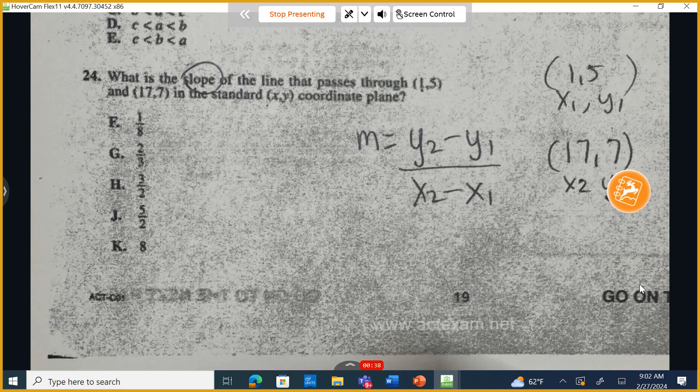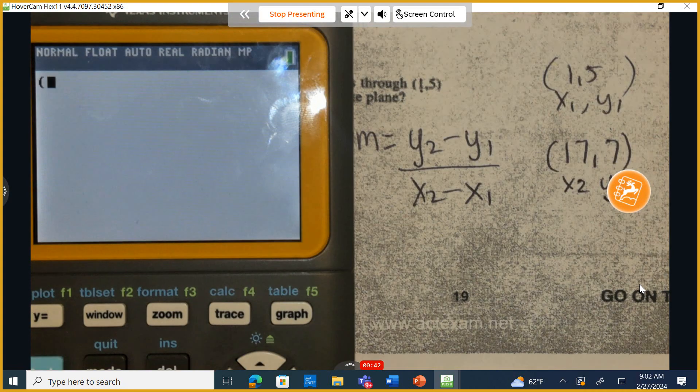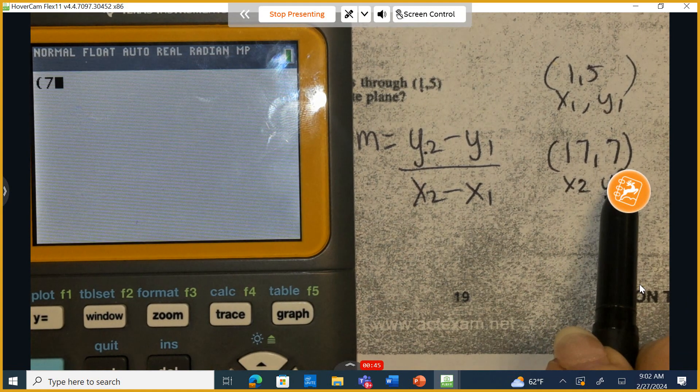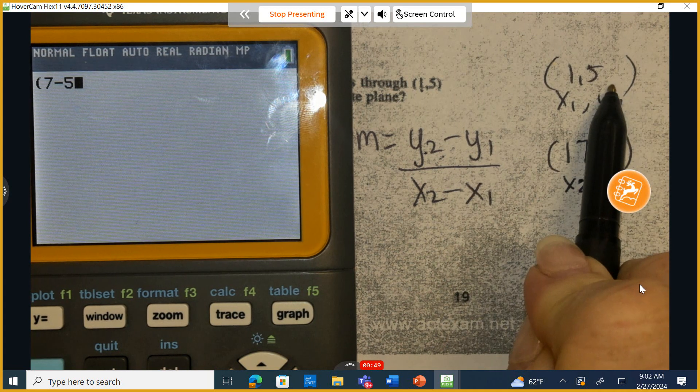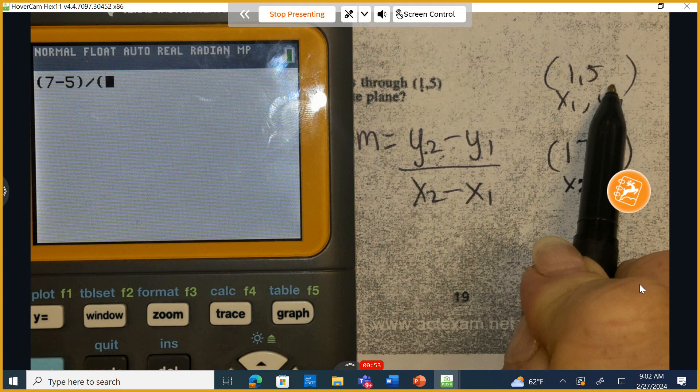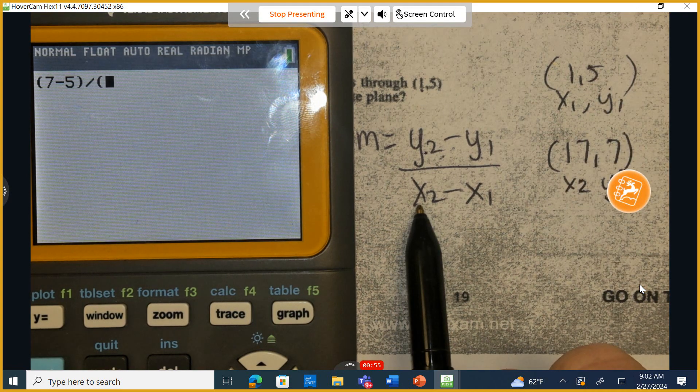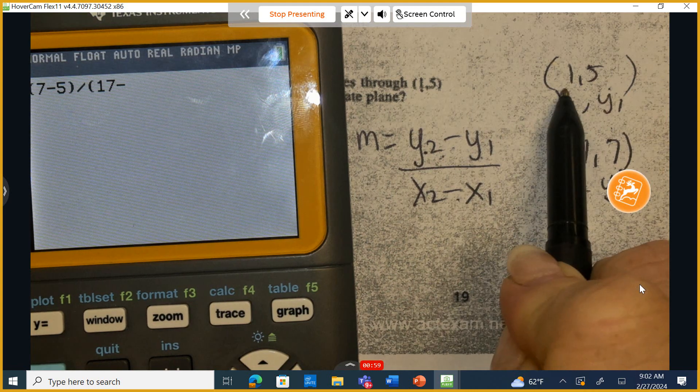Now I'm going to do this to try to save myself time. I'm going to put a parenthesis in here so we can see this. Now my y sub 2 is 7, so 7 subtract y sub 1 is 5. Make sure that I have parenthesis around this position, divided by parenthesis x sub 2 is 17, subtract x sub 1 is 1.